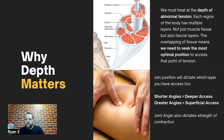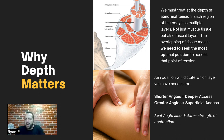Death — why depth matters. We must treat the depth of abnormal tension. Each region of the body has multiple layers, not just muscle tissue but also fascial layers. The overlapping of tissue means we need to seek the most optimal position to access that point of tension.